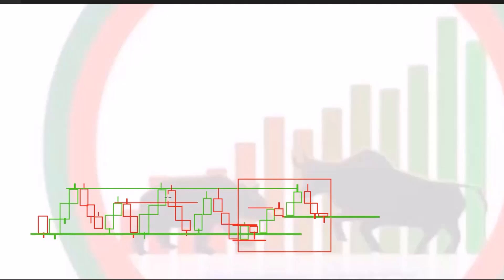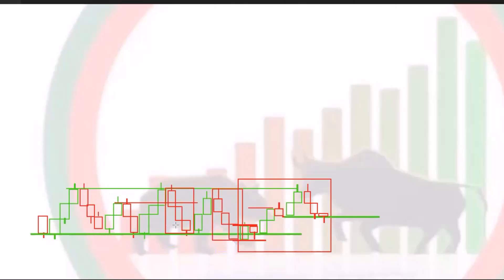So when market is falling down, if we take this one as a pullback, it's not any pullback situation. After these two candlesticks, if we want to take this one as a pullback, it's not a real pullback situation, because the total market movement is a sideways movement. That's why we will definitely not take this one as a pullback situation.